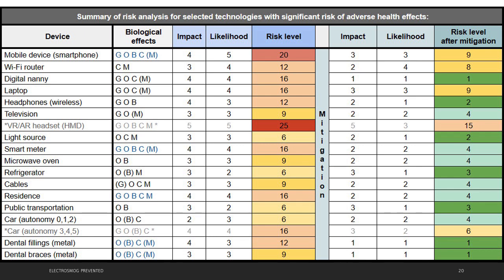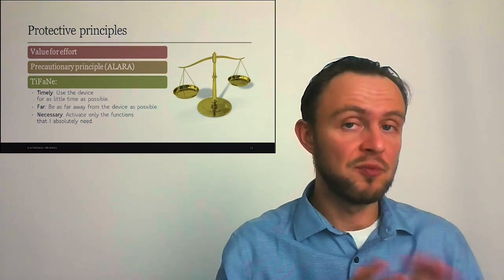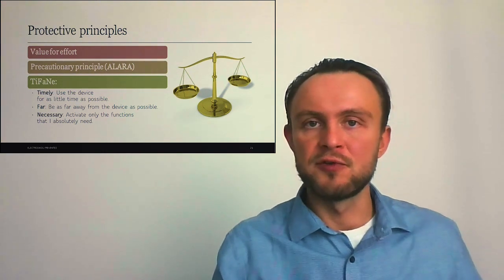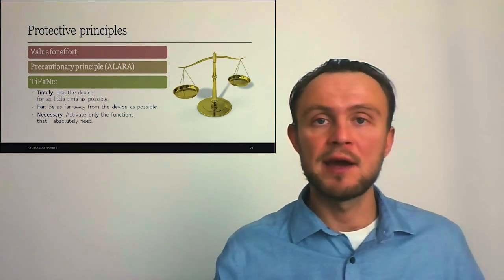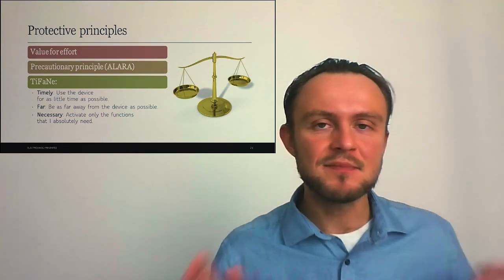For the remaining technologies with significant risk of adverse effects, we have mitigation stage, where I have proposed protective measures, which decrease either impact or likelihood or both, which gives us risk level after mitigation. Right away, we can see that most risks can be very effectively decreased to the level where we can fully accept them. Protective principles should provide us most value for the least effort. This should be based on precautionary principle. This means that we should ensure that we receive as low non-ionizing radiation as reasonably achievable, so that we will effectively use modern technologies with mitigating risks as much as possible.